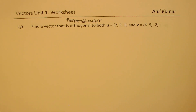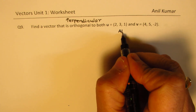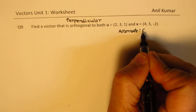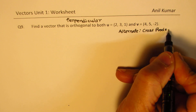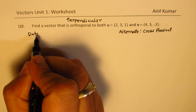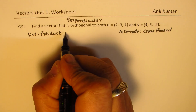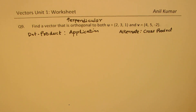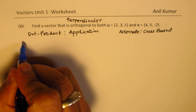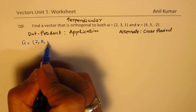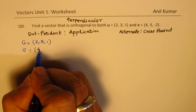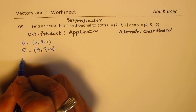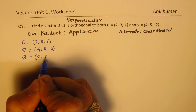In unit 1 we don't really teach cross products, so an alternate solution would use cross product. Since we have only done dot product, we need to apply dot product to get our solution. We'll treat this as a cross product application later in unit 2 when we learn cross product. We are given two vectors: u=(2,3,1) and v=(4,5,-2). Let's say w is orthogonal to both and we call its components a, b, c.